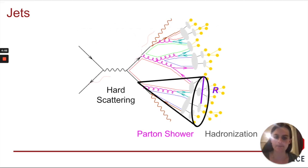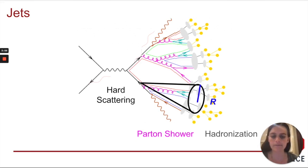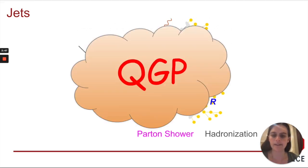We reconstruct jets with a given resolution parameter R, which is roughly related to the cone radius, where we can define different jets with different resolution parameters that are sensitive to different aspects of the jet evolution. Jets in heavy ion collisions interact with the quark gluon plasma formed in this system, which results in jet energy loss and jet substructure modification.